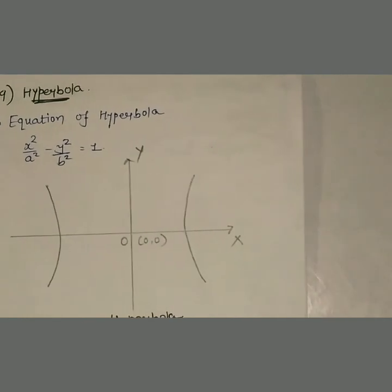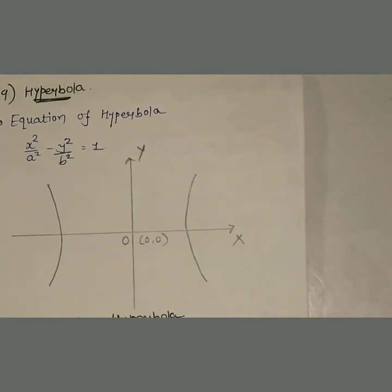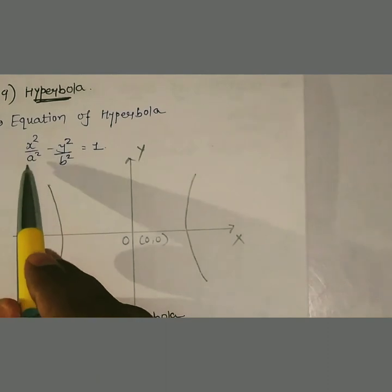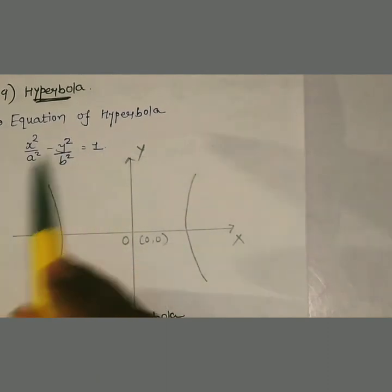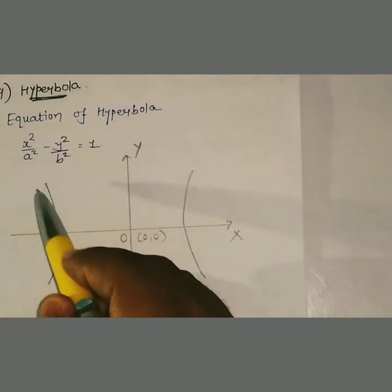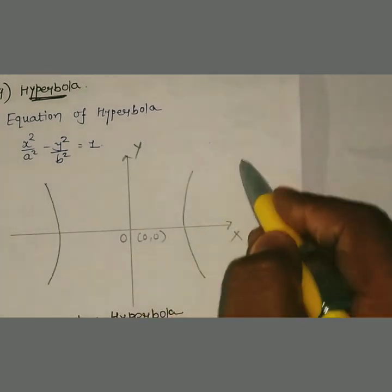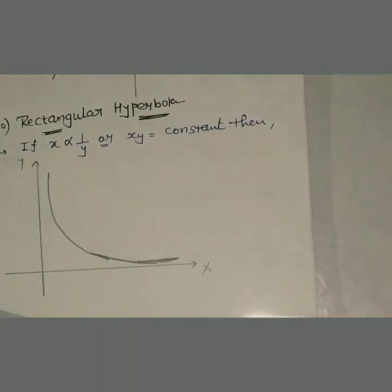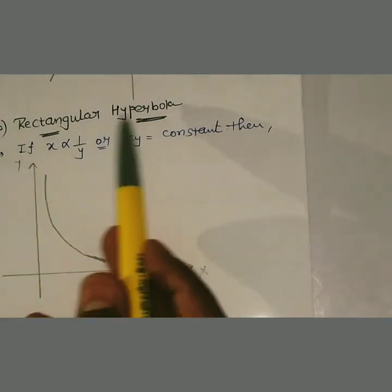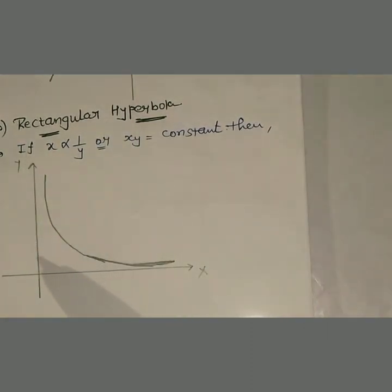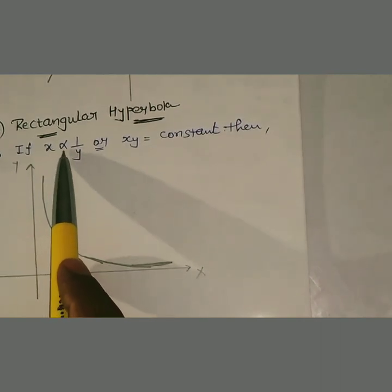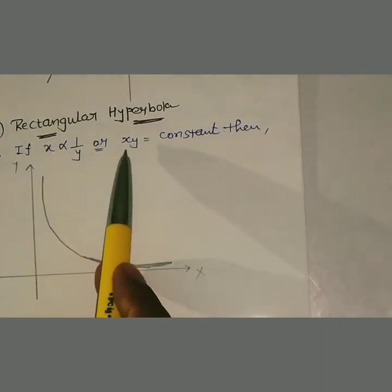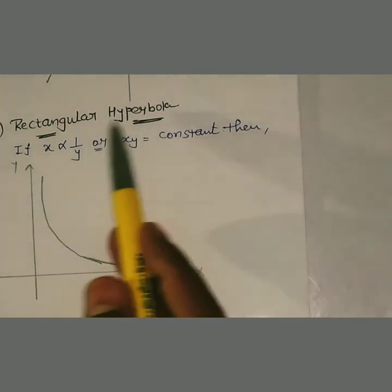Now we discuss the Hyperbola। Equation of hyperbola: x²/a² − y²/b² = 1। This is your y-axis, this is your x-axis, origin (0,0) — and the hyperbola opens outward on both sides. Last one: Rectangular Hyperbola — equation is x ∝ 1/y or xy = constant। This is the rectangular hyperbola।